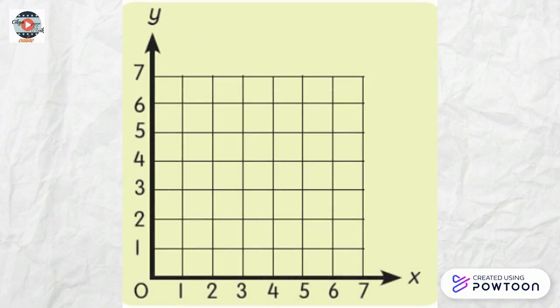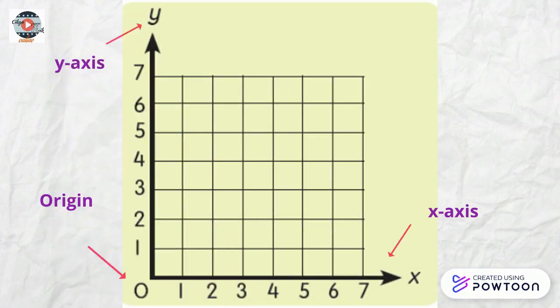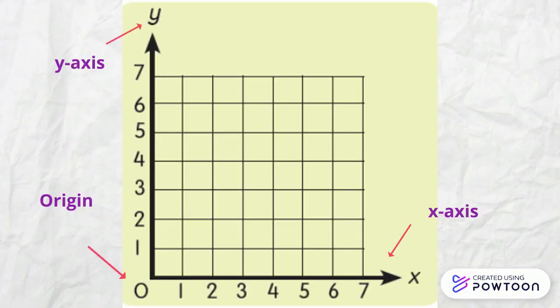Let's summarize. The center of the graph is called the origin. The horizontal number line is known as the x-axis, and the vertical number line is the y-axis. We also learned that an ordered pair is made of an x-coordinate and a y-coordinate. That wraps up our lesson.